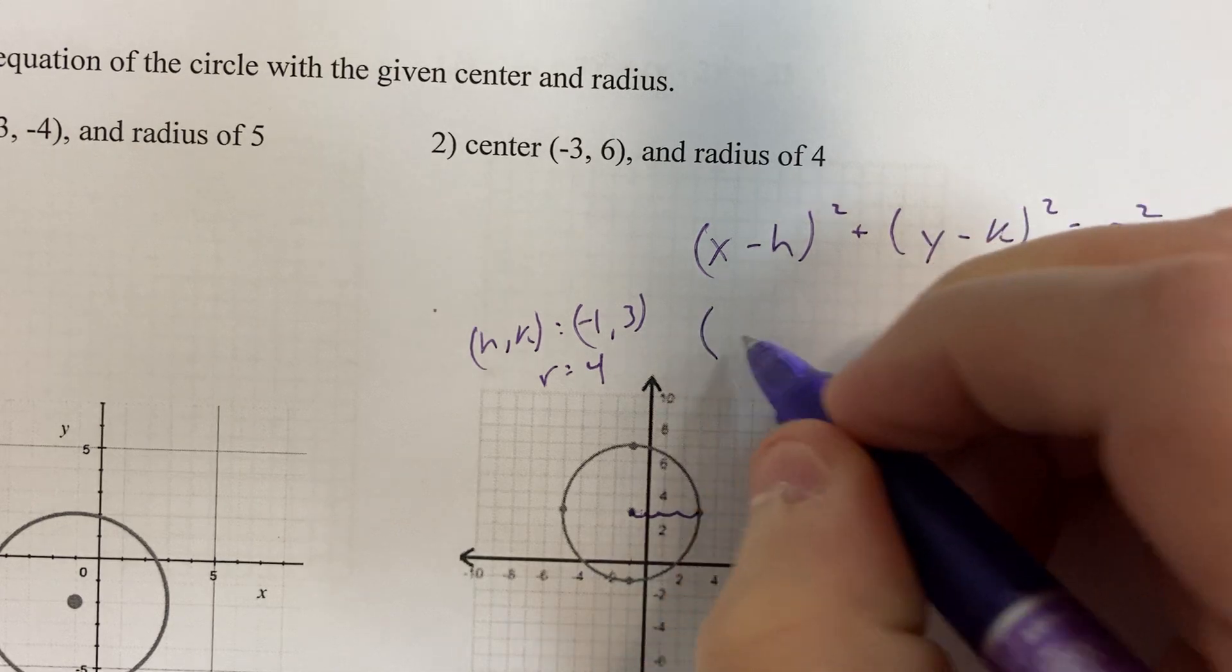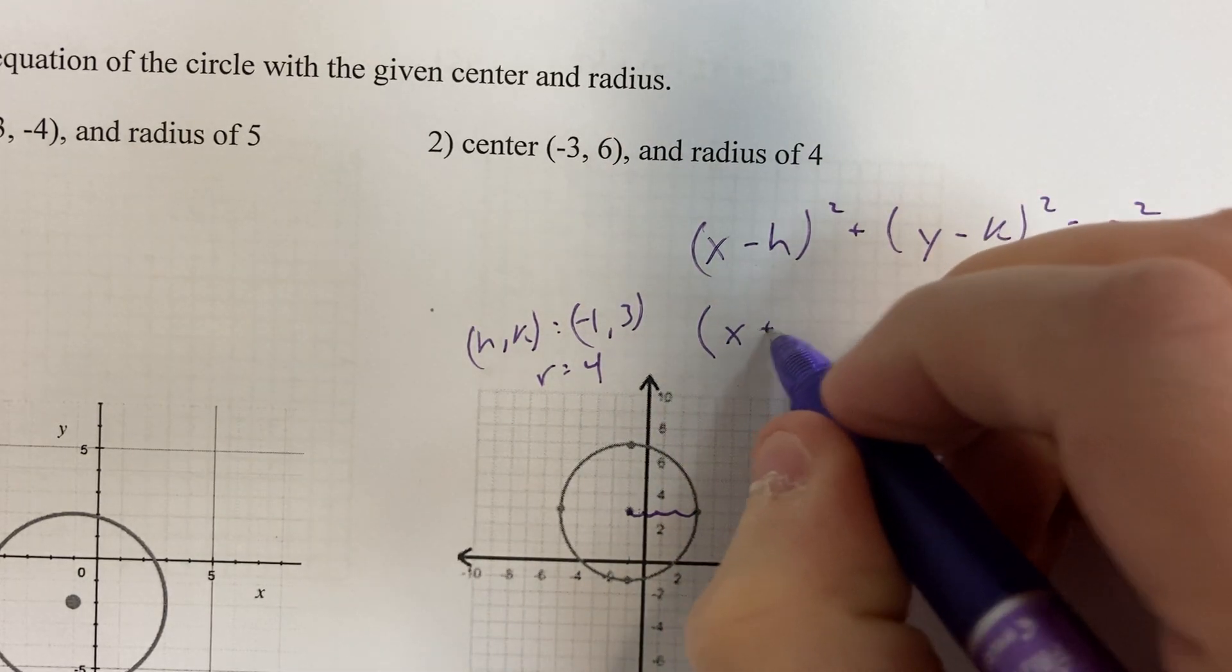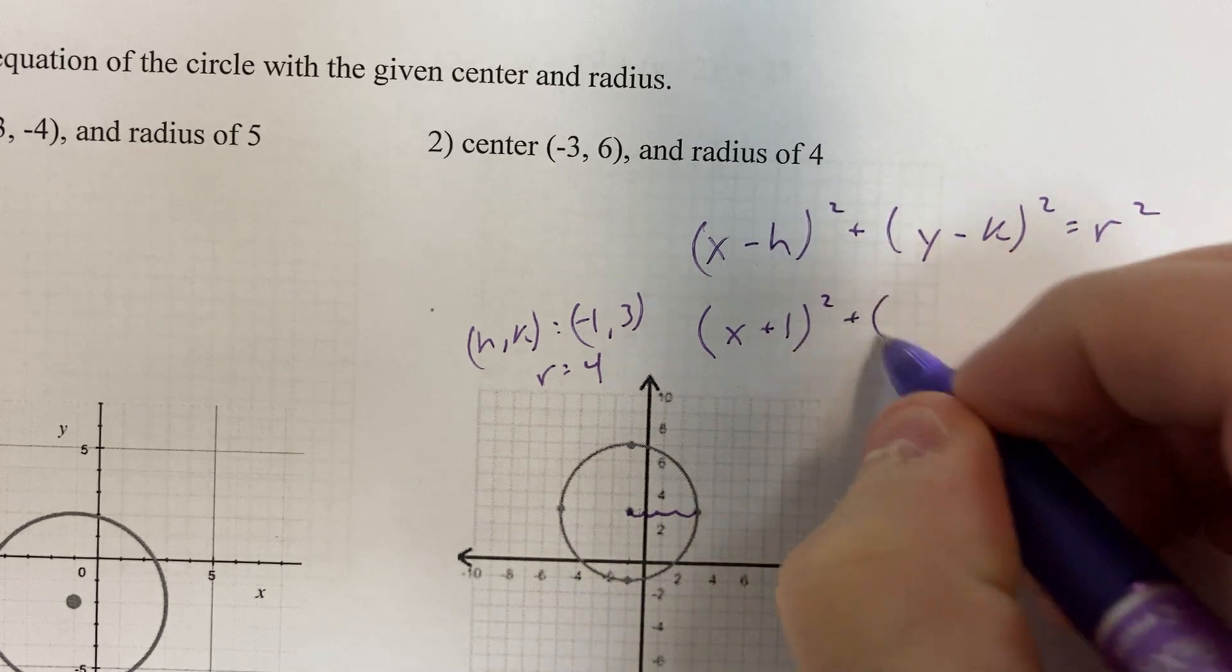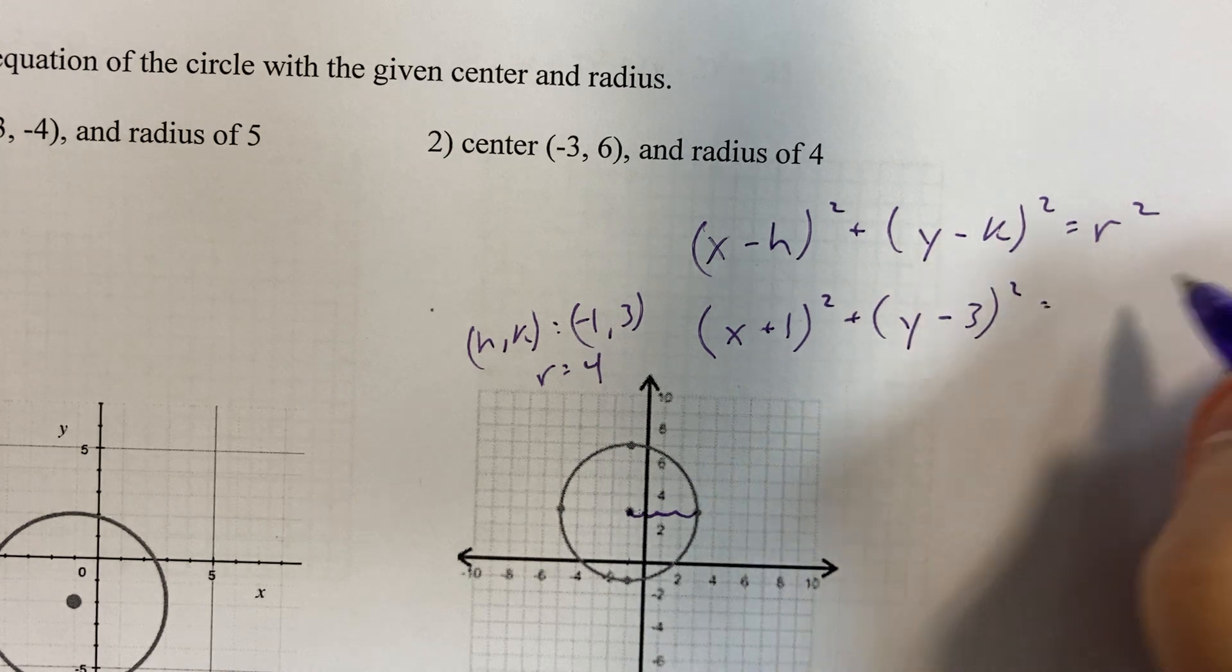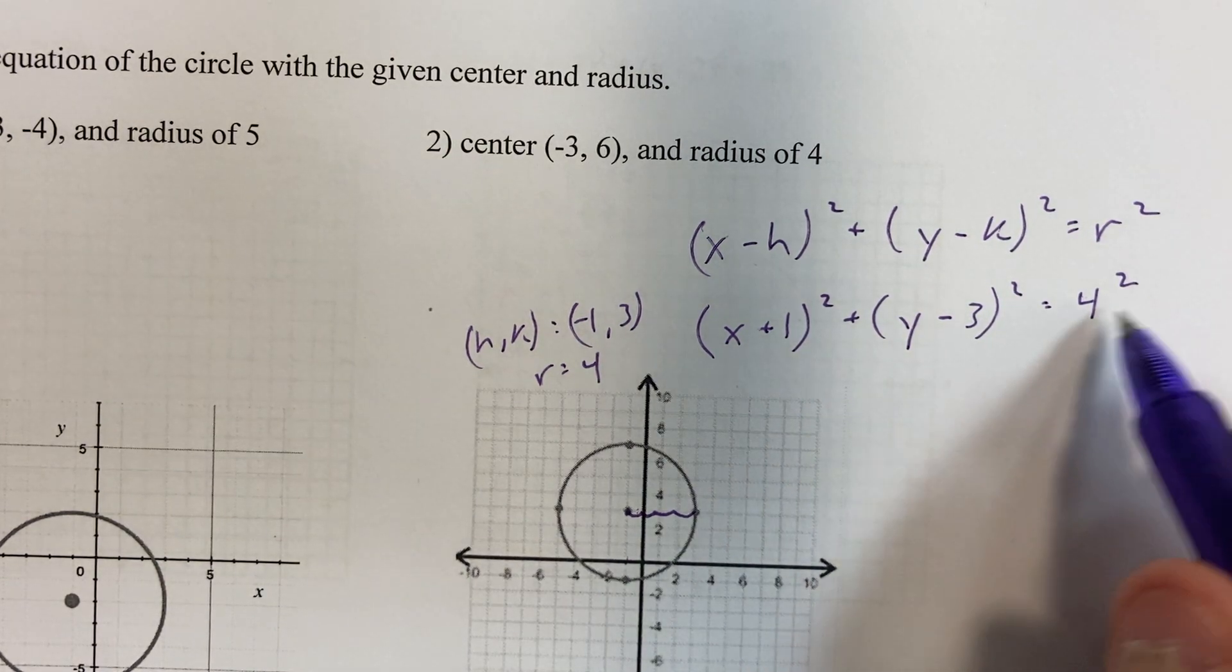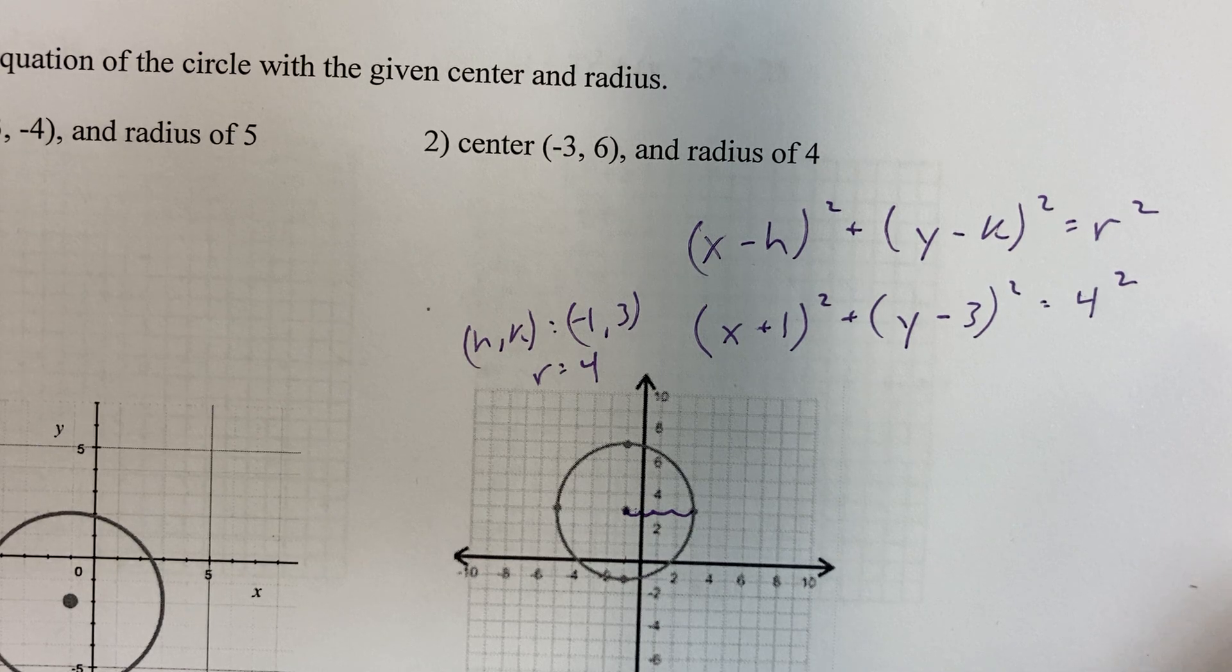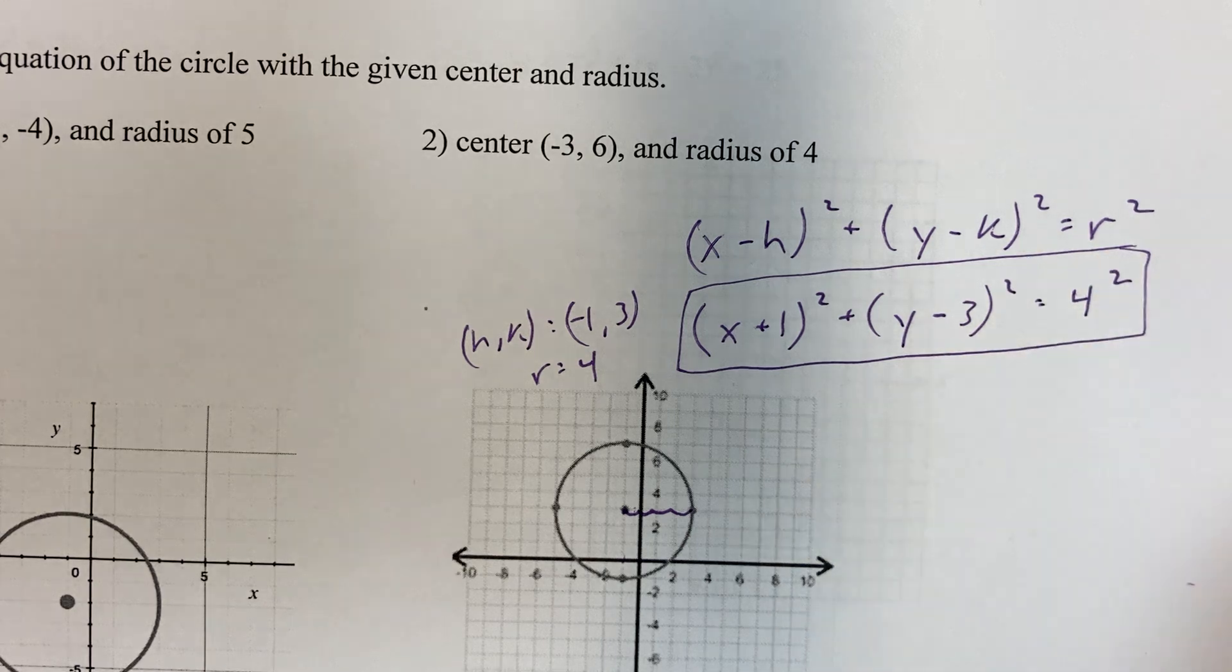So we can just plug this in. x minus negative 1, so I'm going to do plus 1. (x + 1)² + (y - 3)² = 4². You can call it 16 or 4 squared, it doesn't matter. And we're done. Circles are pretty simple.